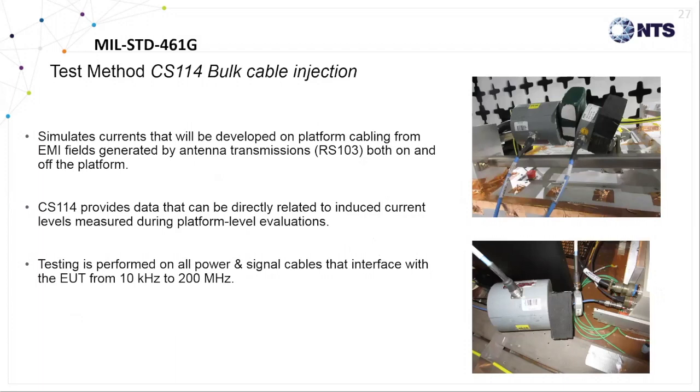Test method CS114 is a conducted susceptibility test level used to evaluate the effects of RF currents coupled to the device's input power and interconnecting cables from nearby radiated sources on the platform. Therefore CS114 testing is required on all installation platforms and all procurement agencies.